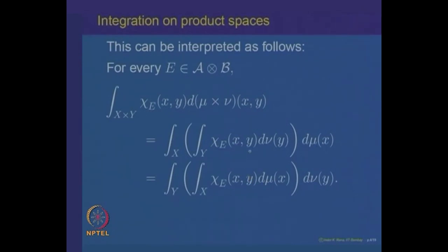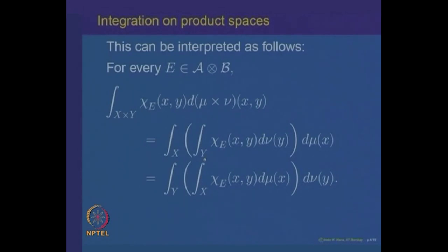The importance of this result lies in the fact that the indicator function of a set E is a function of two variables. To find its integral with respect to the product measure, we can fix one variable, say x — making it a function of y alone — and show that it is integrable with respect to ν. Then when we integrate out y, we get a function of x that can be integrated with respect to μ, giving the integral of the indicator function of E. We can also interchange x and y and get the result.